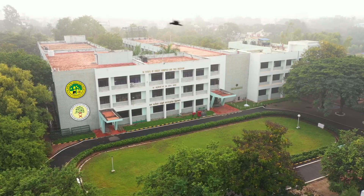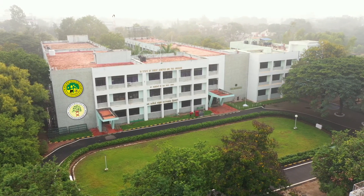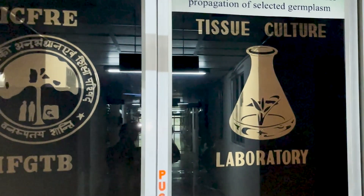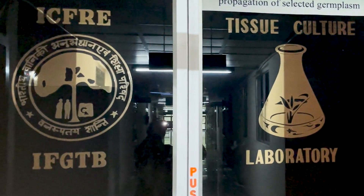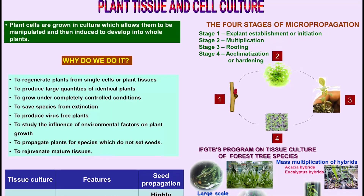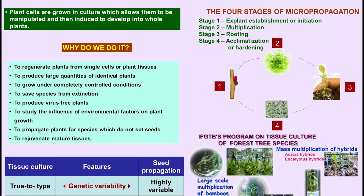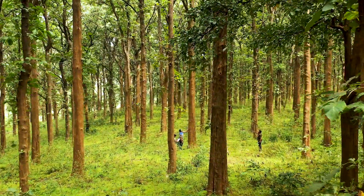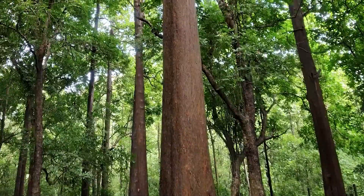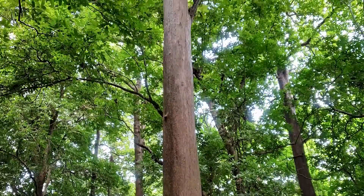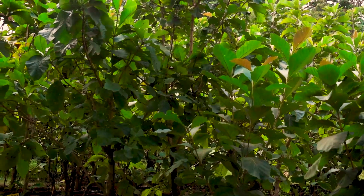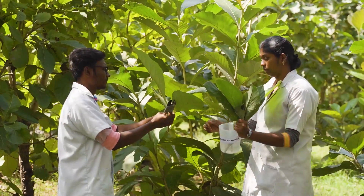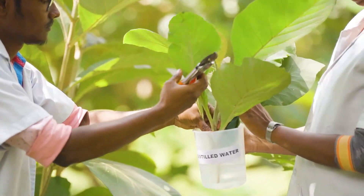The ICFRE Institute of Forest Genetics and Tree Breeding at Coimbatore focuses on genetic improvement in clonal teak production through tissue culture. The Institute has developed tissue culture protocols for teak from identified superior teak trees of natural stems through a selection process. Coppice shoots from these trees have been collected and assembled in a germplasm bank of the Institute for mass production.